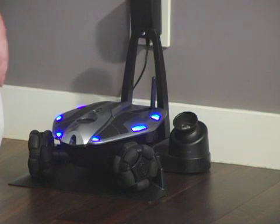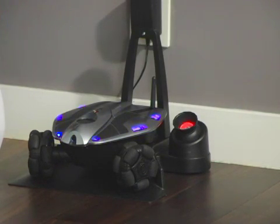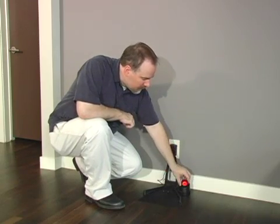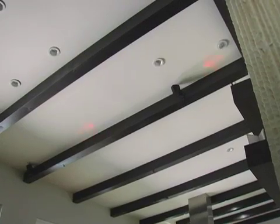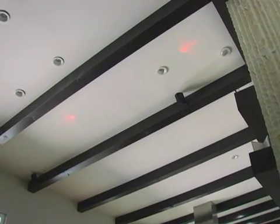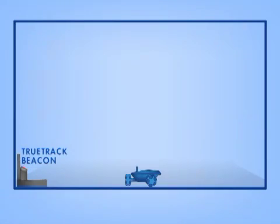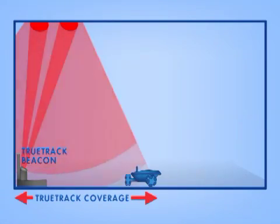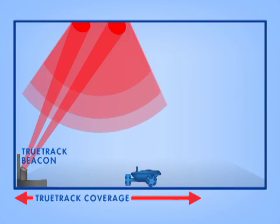The navigation signal is emitted by the TrueTrack beacon, which is built into the side of the charging dock. To set a room up to use TrueTrack, you aim the beacon at the ceiling in the center of the area you wish to cover. Red aiming spots briefly turn on to show you where the signal is centered. Where you position the signal determines where Rovio can navigate using TrueTrack.